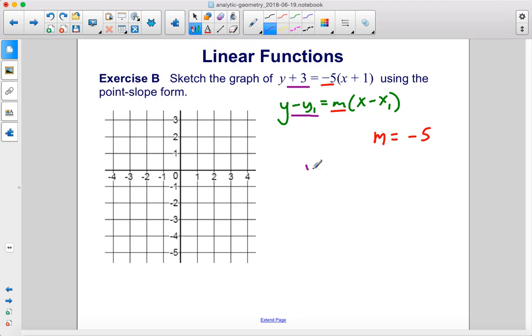Because if you put negative 3 in here, you will get y plus 3 here because of the double negative. We'll cancel. And we have negative x1 here becomes plus 1. So x1 equals negative 1.